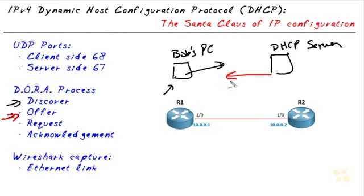The offer is going to include information such as an IP address for the client. It also has additional details regarding the subnet mask and other options available for that client.